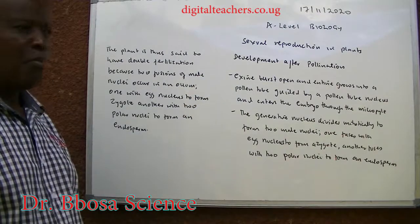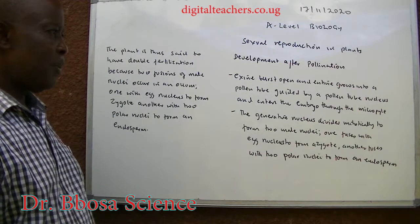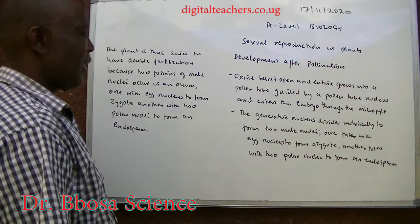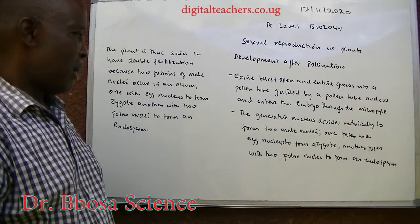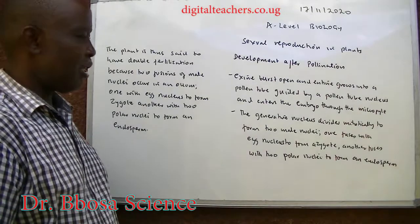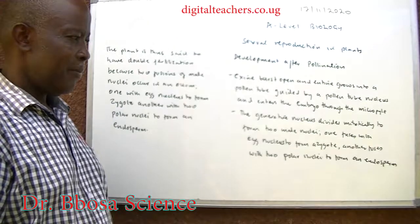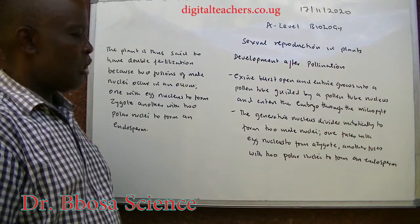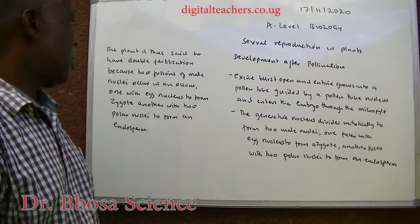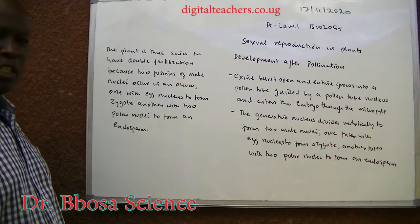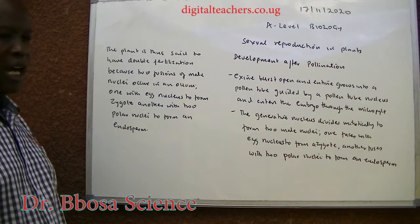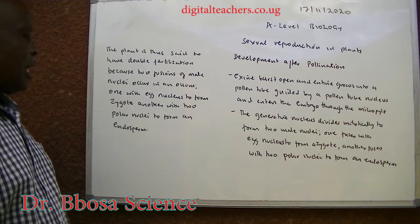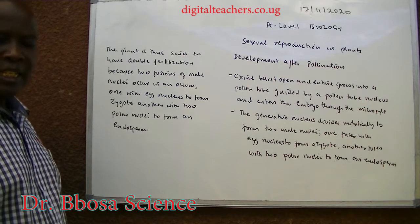Development after pollination: the exine bursts open and the intine grows into a pollen tube, guided by the pollen tube nucleus, and enters the embryo sac through the micropyle. The generative nucleus divides to form two male nuclei. One fuses with the egg nucleus to form a zygote. Another fuses with two polar nuclei to form an endosperm. The plant is said to have double fertilization because two fusions of male nuclei occur — one with the egg nucleus to form a zygote, and another with two polar nuclei to form an endosperm.